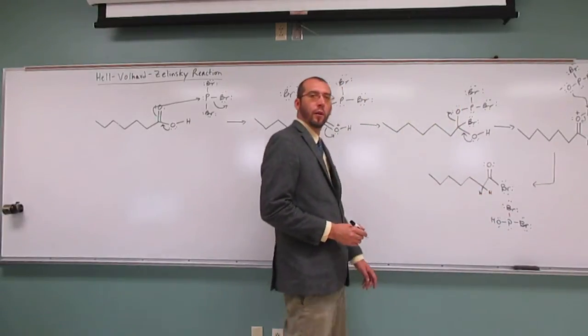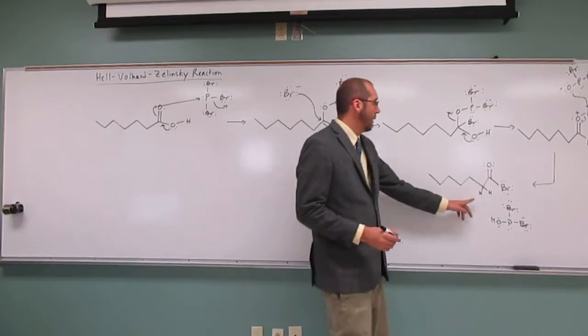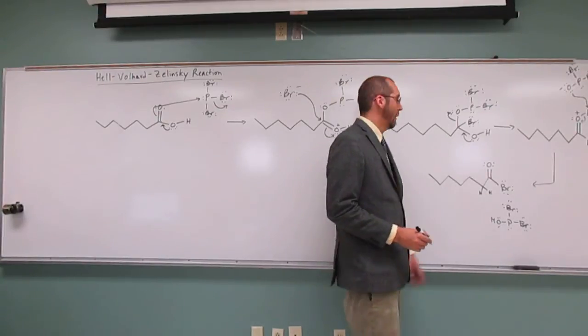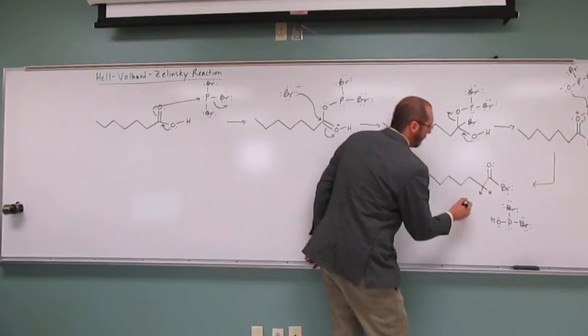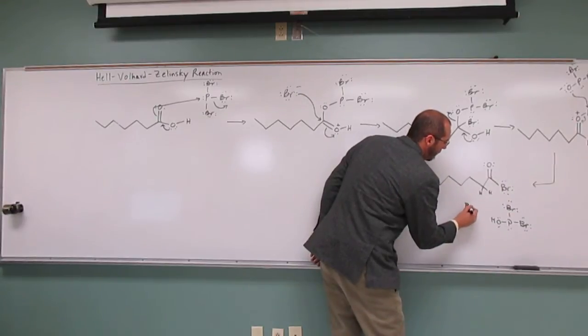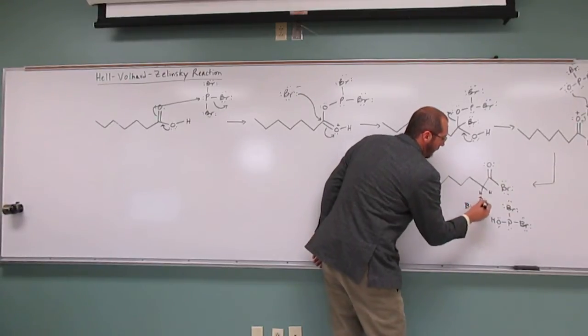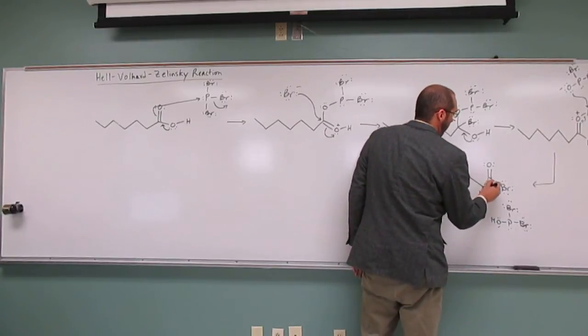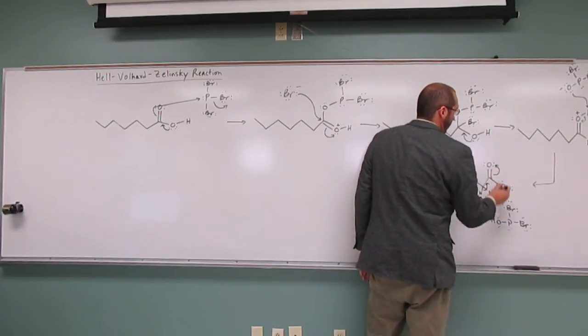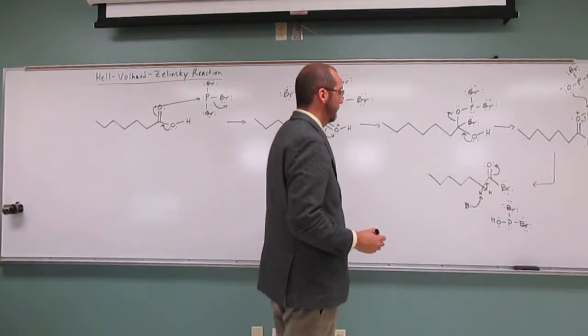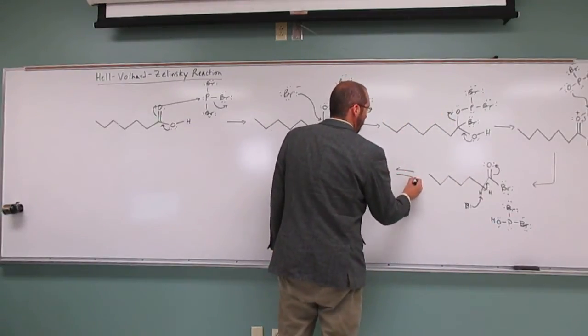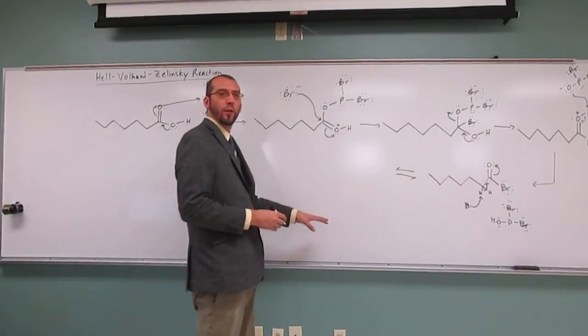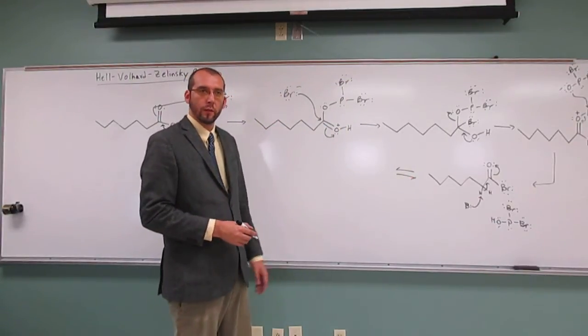So there's going to be some base in here. It's going to want to remove, so now these are the most acidic hydrogens, right? So now some base in here is going to remove that hydrogen. So what we're doing is tautomerizing.